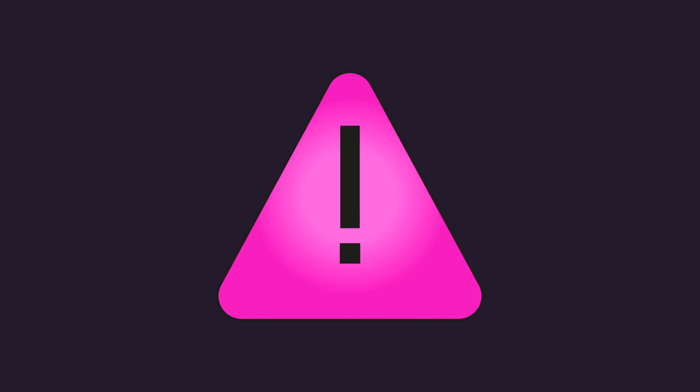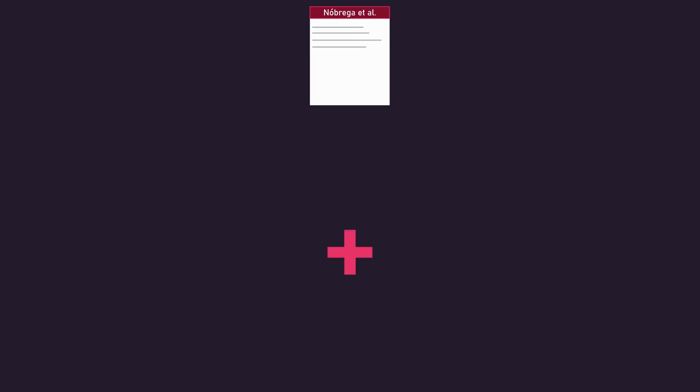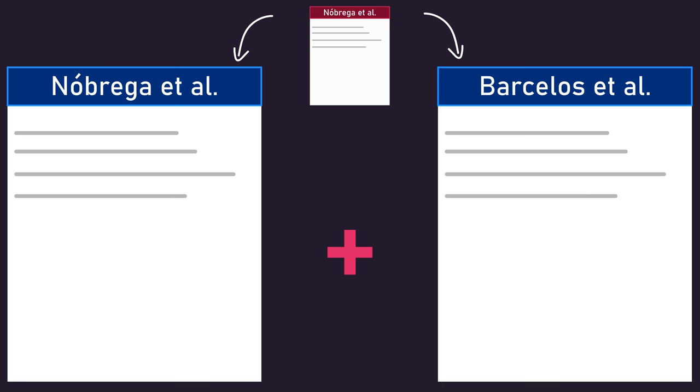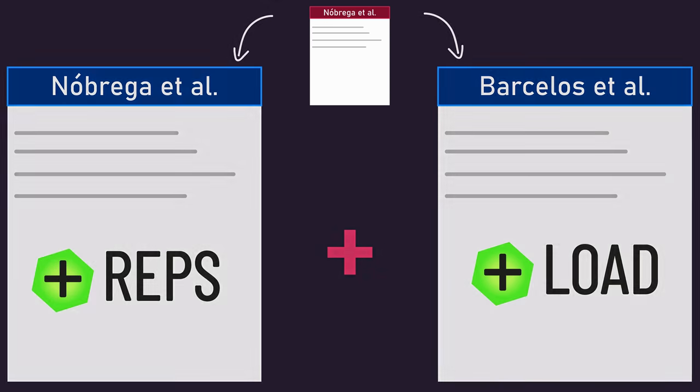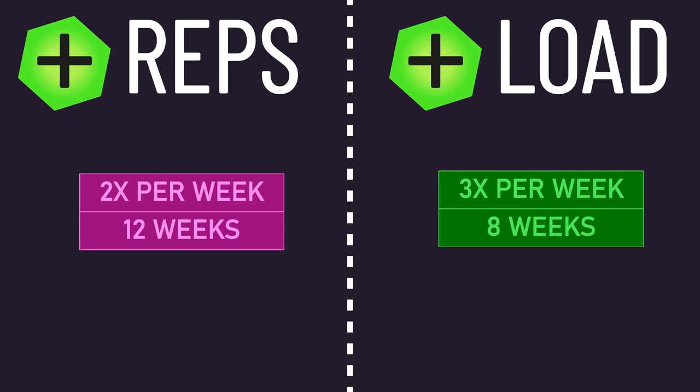Yet there were important limitations with this study. It wasn't a randomized controlled trial. Rather, it combined the results of two separate studies, one study that progressed with load and another study that progressed with reps. This actually resulted in the training frequency and duration differing between the load and rep progression groups, confounding things.